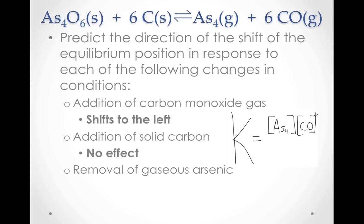What about the removal of arsenic vapor? How would that affect the equilibrium? Removing a product would cause the equilibrium to shift to the right, producing more products.